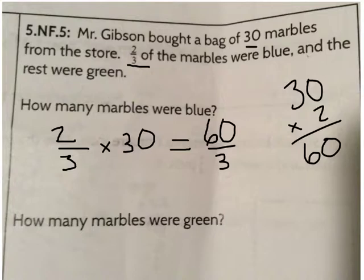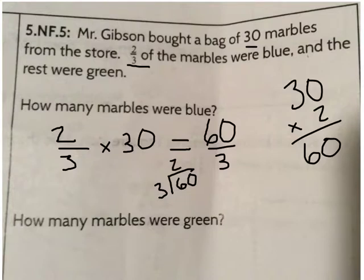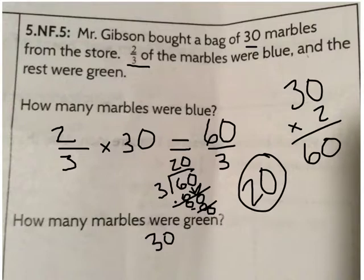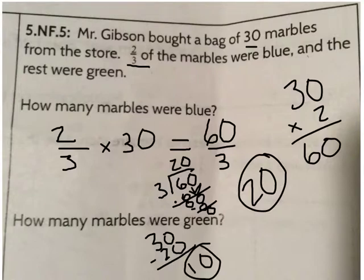Now I can divide 60 by 3 to find the number of blue marbles. 3 goes into 6 two times; 2 times 3 is 6. Bring down my 0. 3 goes into 0 zero times, with nothing left over. Mr. Gibson has 20 blue marbles. It says the rest of the marbles were green. I know there are 30 total marbles and 20 are blue. I need to subtract 30 minus 20 to find the difference. There are 10 green marbles.